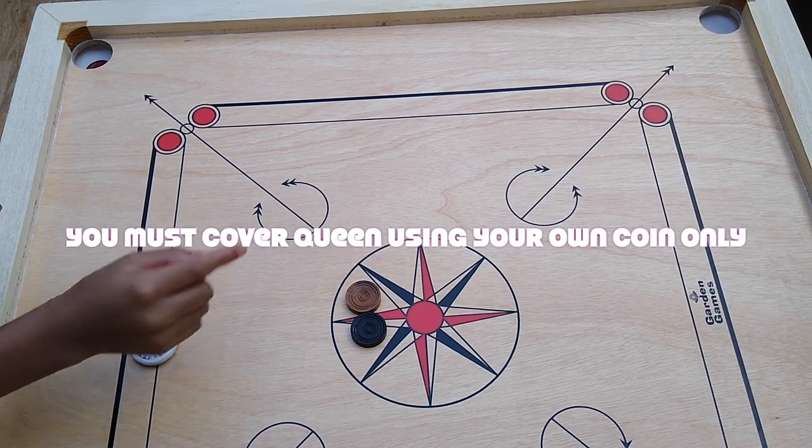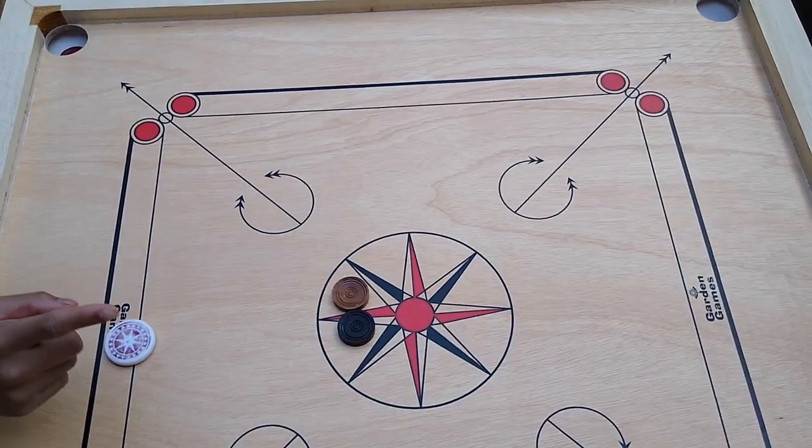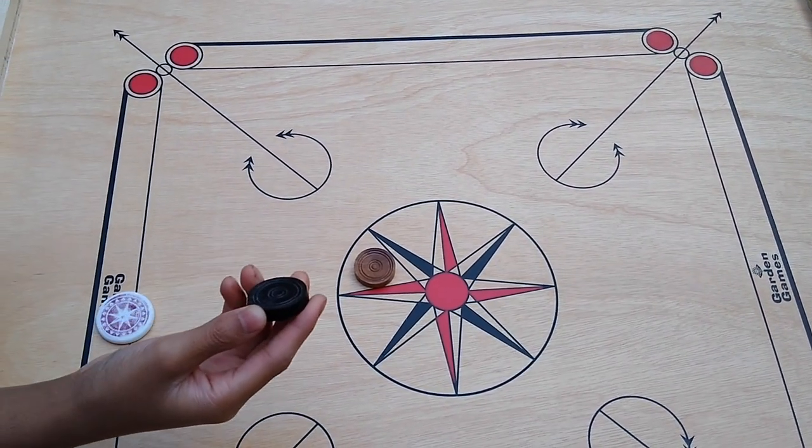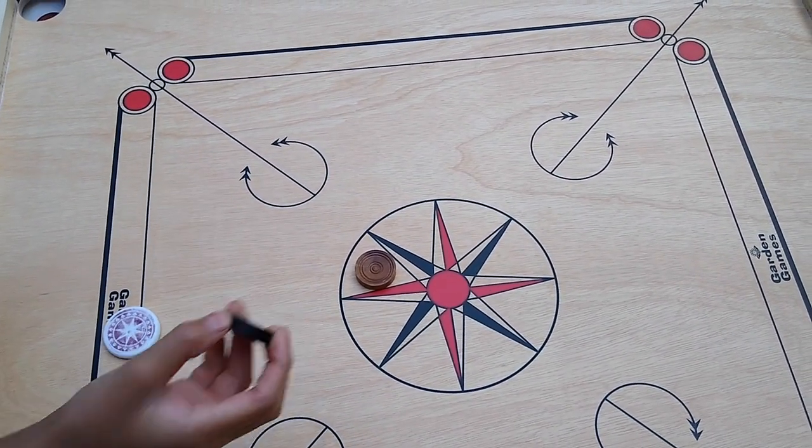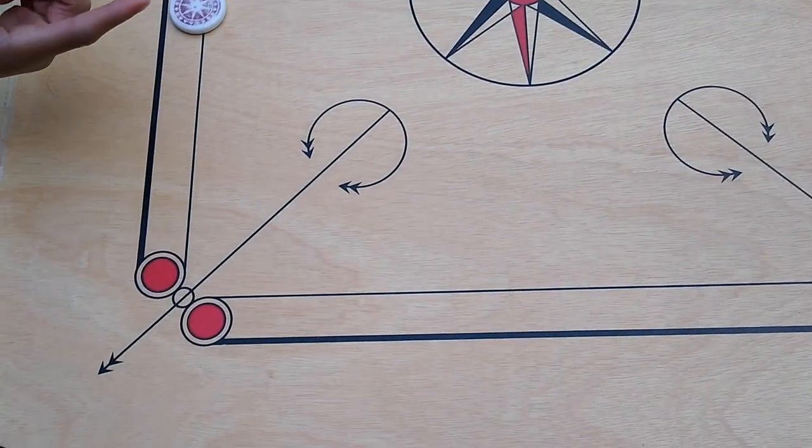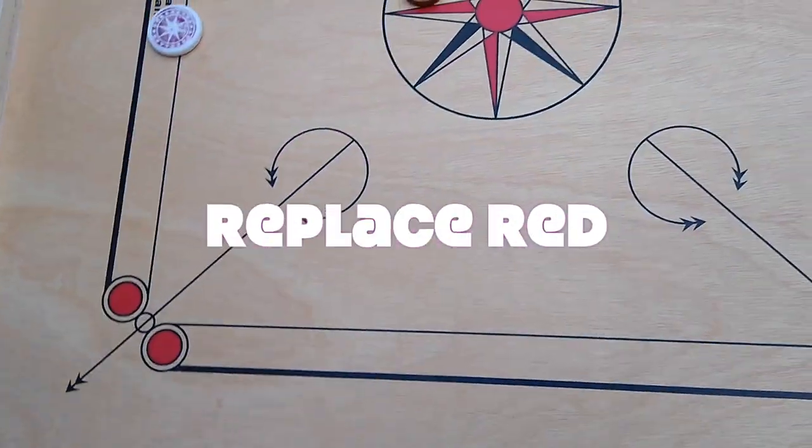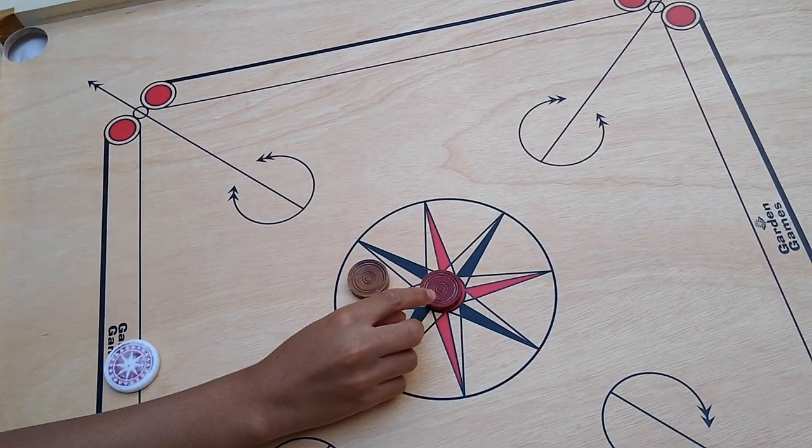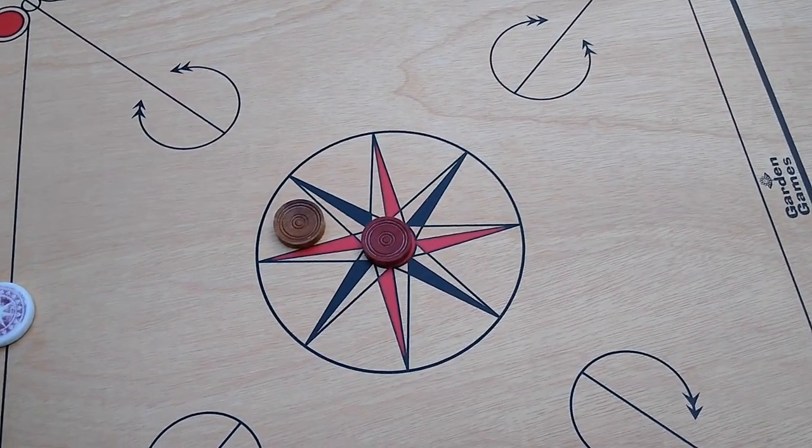Right now my team is the white one, but if I accidentally strike a black one, which is not my team but the opposite team, into the pocket hole, that means I have to replace the queen where it belonged, which is the center of the circle. After that, you continue the game.